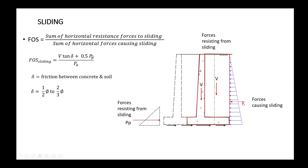The force that will cause the wall to slide is due to the lateral pressure from the active side. The rest of the forces will try to resist the wall from sliding.